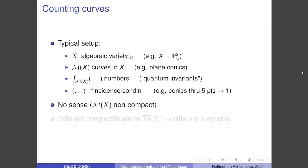Usually this doesn't make sense because M(X) is more often than not non-compact. There are different choices of compactifications of these moduli spaces of curves, one-dimensional objects in X, that lead to different invariants with different flavors. They are nonetheless related — for example, stable maps and stable pairs.